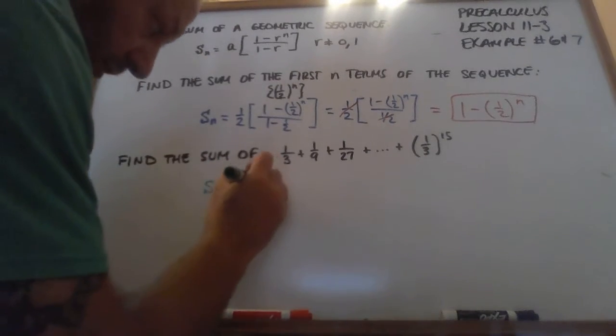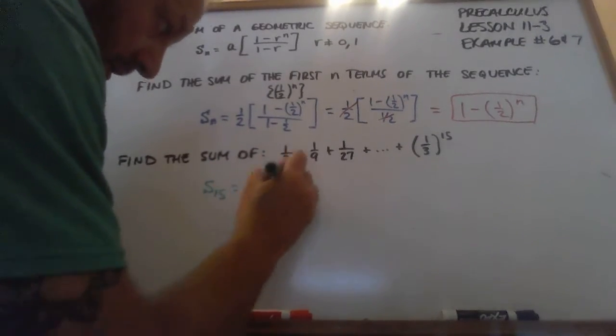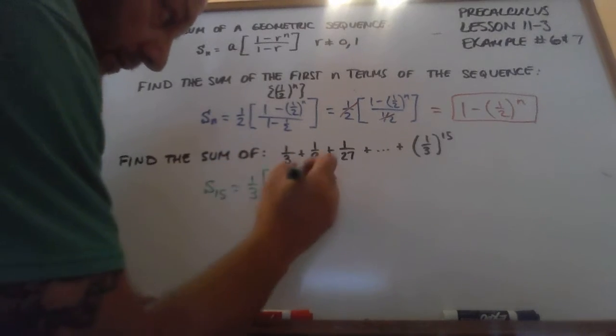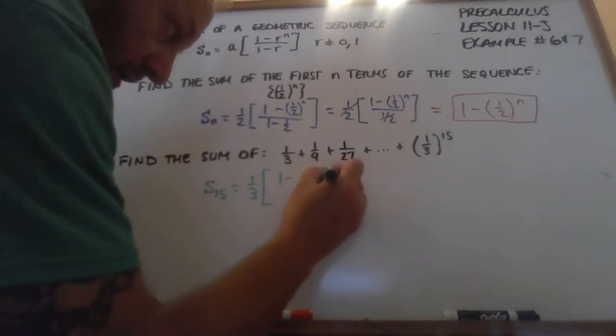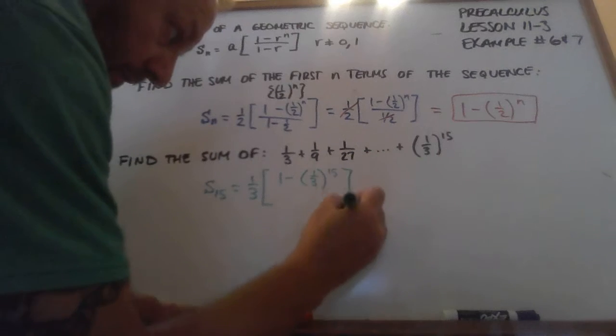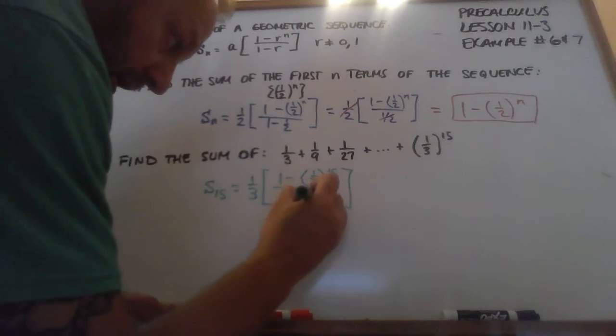It's going to be the first term, which is 1 third, times 1 minus, we said the common ratio is 1 third, to the 15th power, all over 1 minus 1 third.